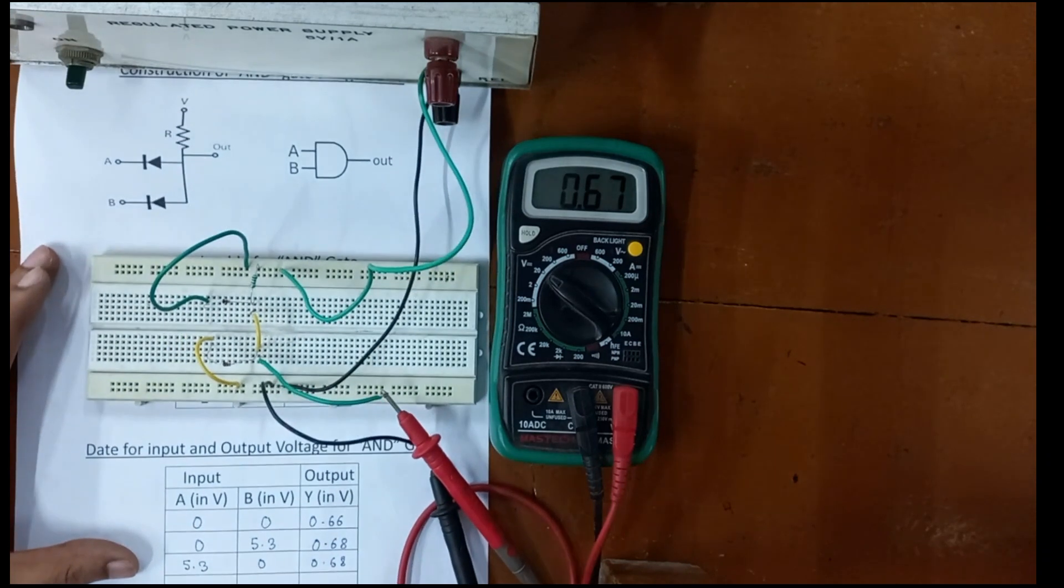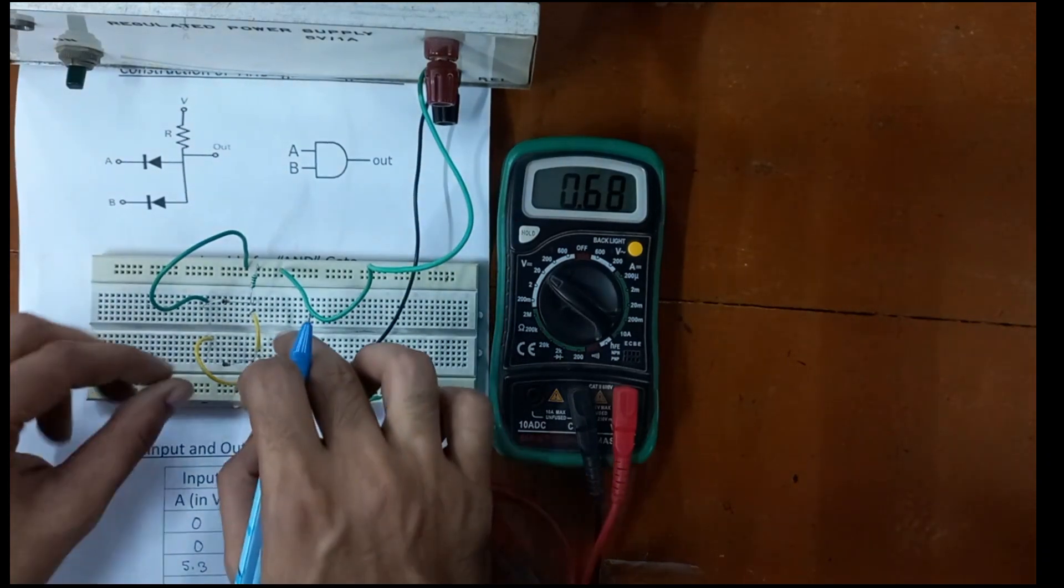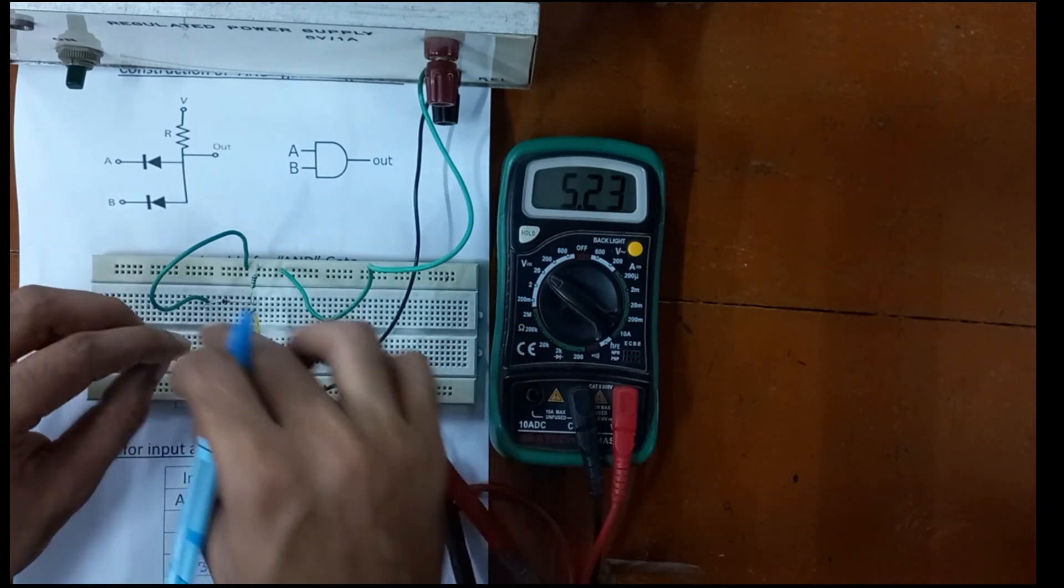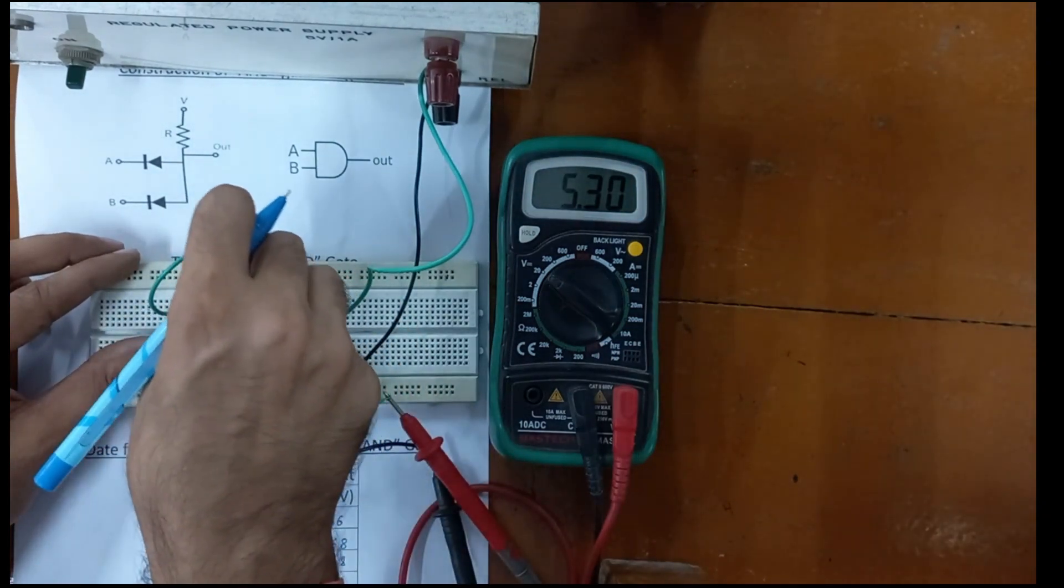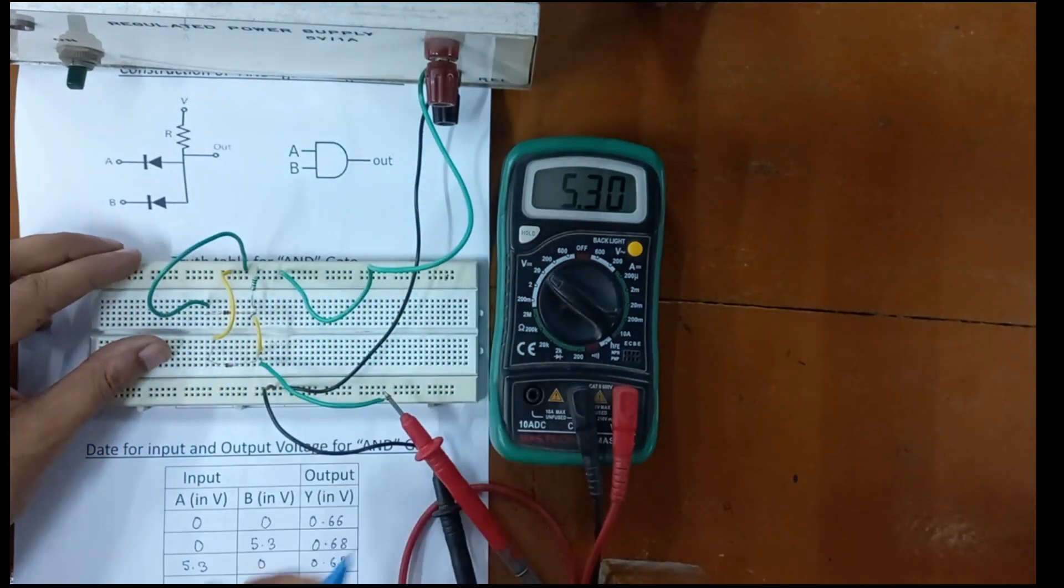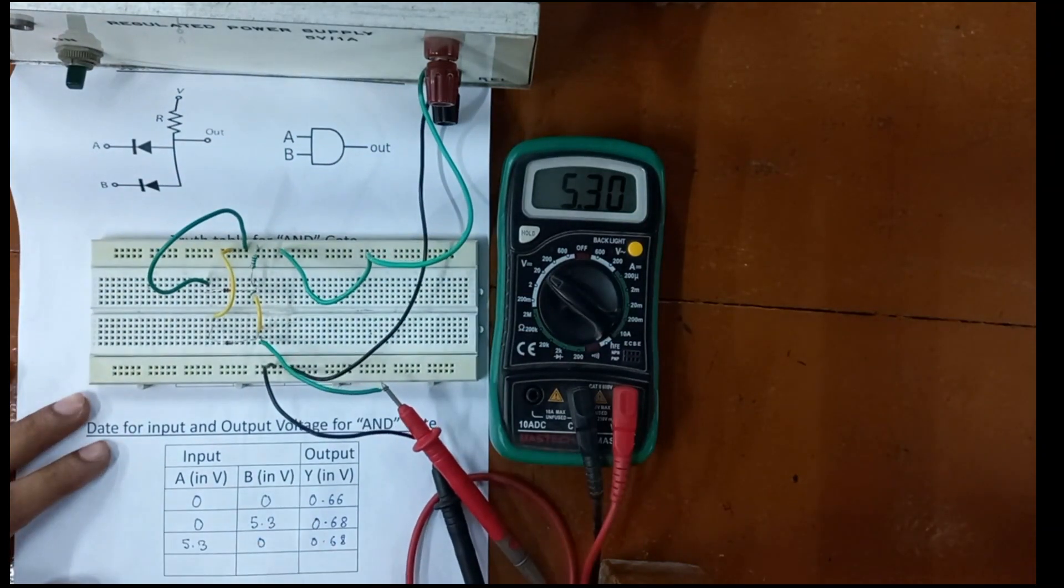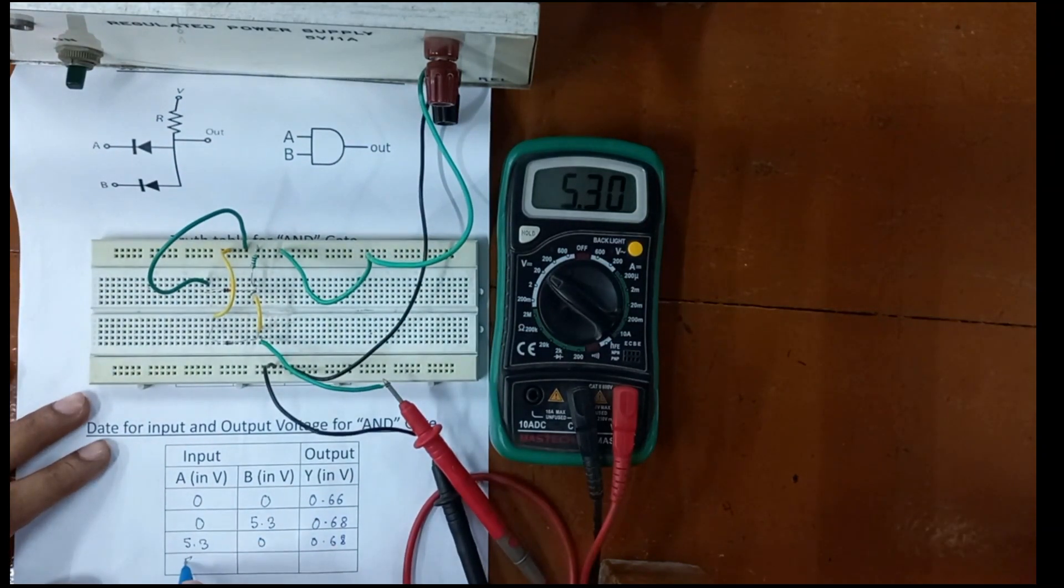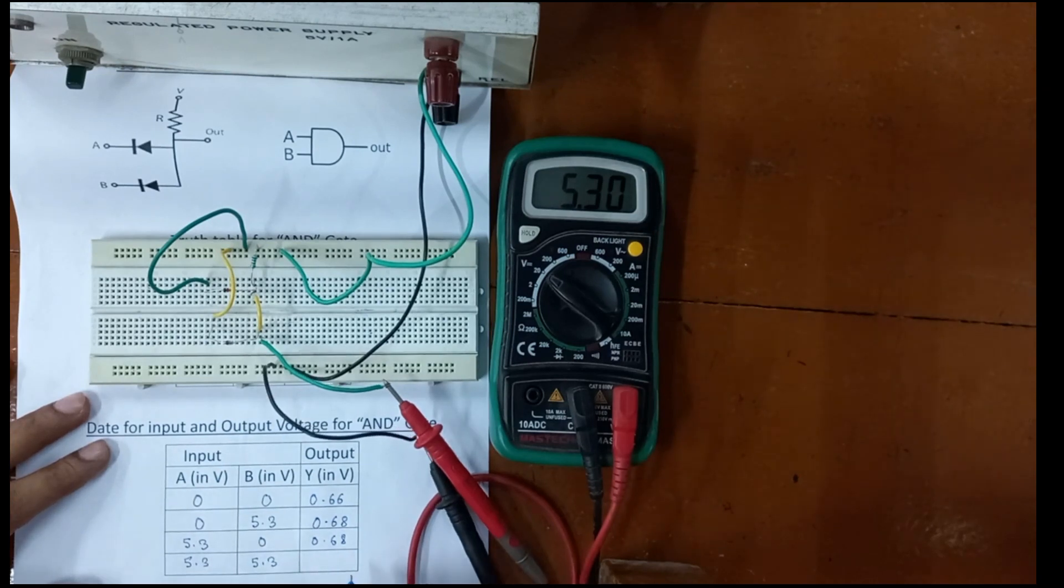Now make both inputs high, that is connect both inputs to the 5 volt supply. So A is 5.3, B is 5.3, and output is also 5.3.